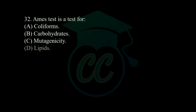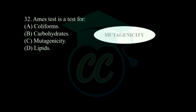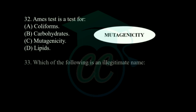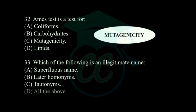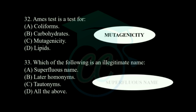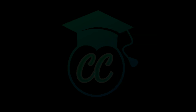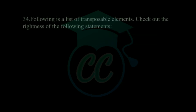Next question: the Ames test is used for — options: coliforms, carbohydrates, mutagenicity, and lipids. The correct answer is mutagenicity. Next question: which of the following is an illegitimate name? Options: superfluous names, later homonyms, tautonyms, and all of the above. The correct answer is superfluous names.